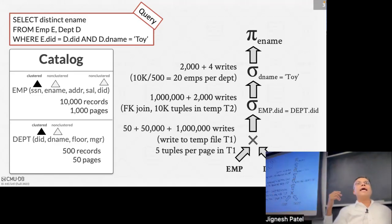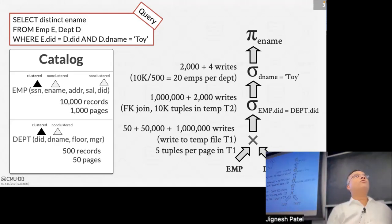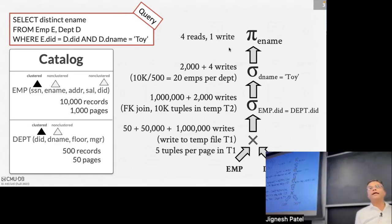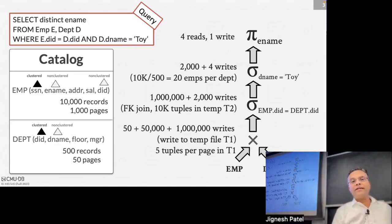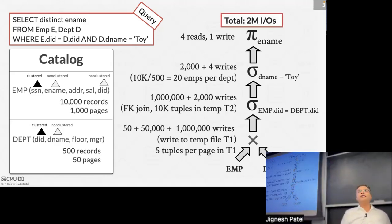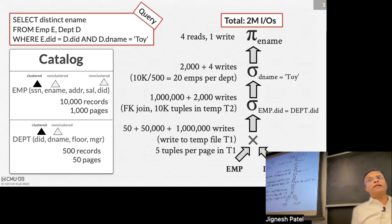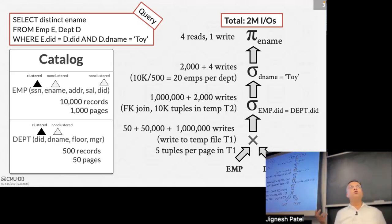Finally, we project out just the employee name — the only column the query wants. That reads 4 pages and writes a small output. Adding everything up gives approximately 2 million I/Os for this naive plan.